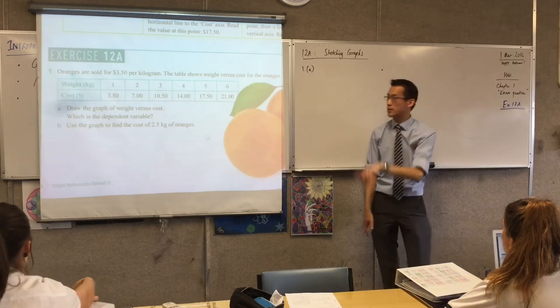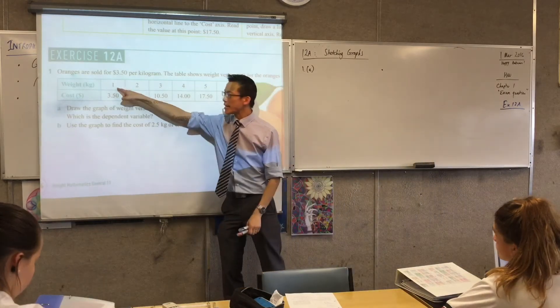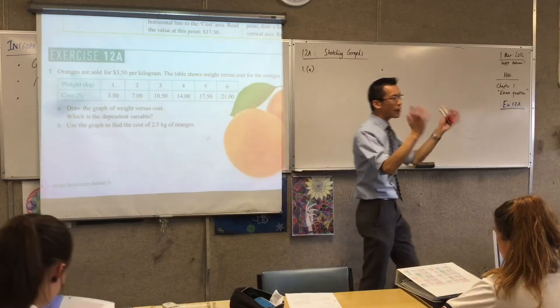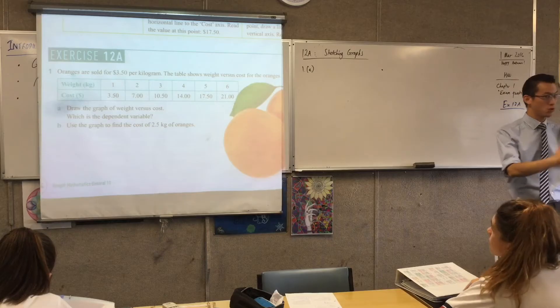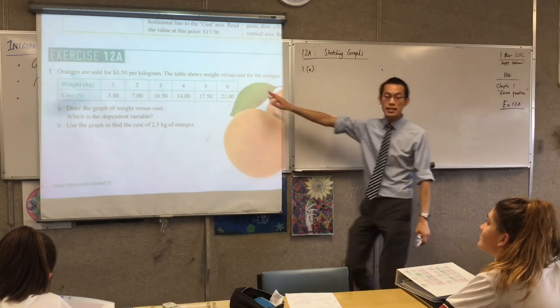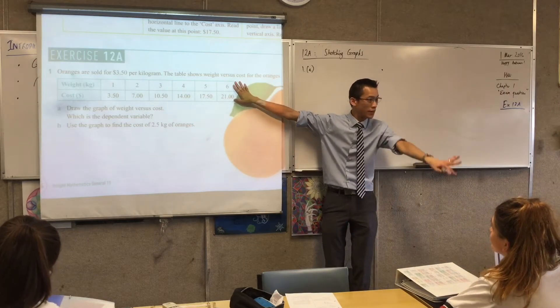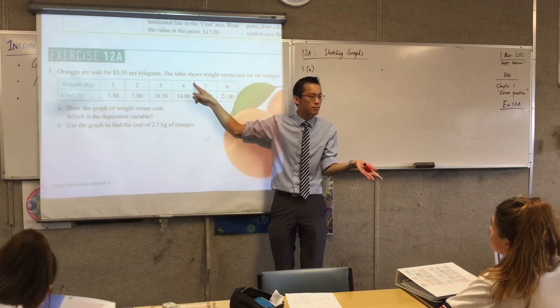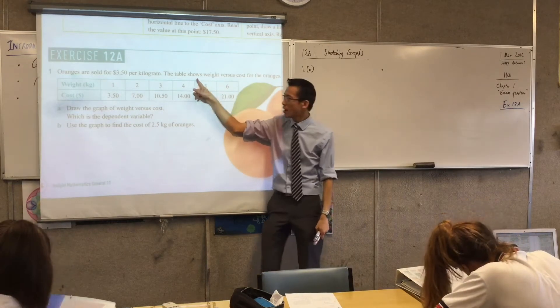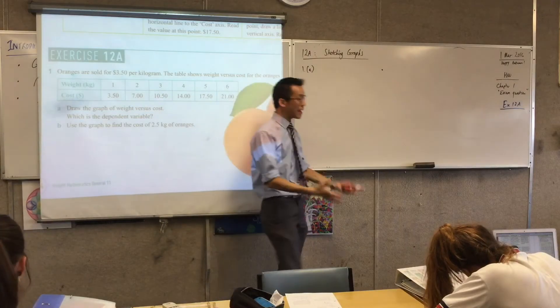And you can kind of see in the way that this is set up, weight is the thing that's independent. You can make the weight whatever you like. How many kilos should I buy? I guess I'll go and I'll buy three kilos because I'm going to be choosing all of these. This is the independent variable. You can make it whatever you like. The cost depends on how much you buy. Depends on how many kilos. So that makes the cost the dependent variable.